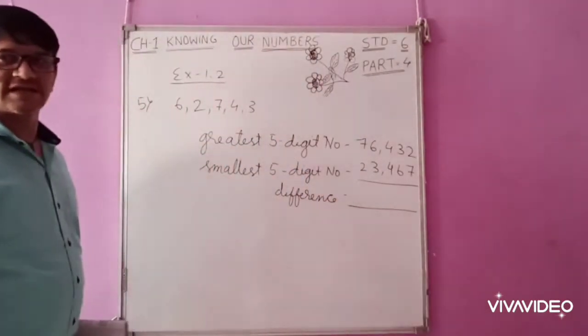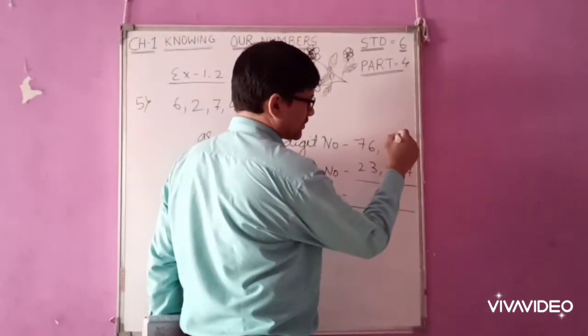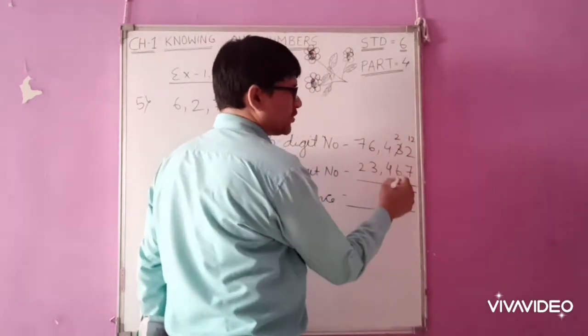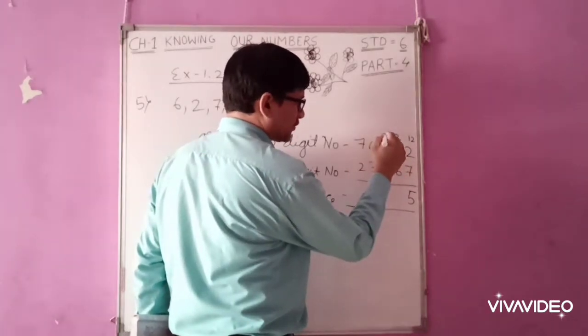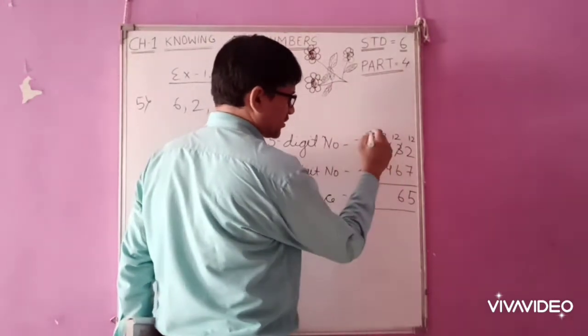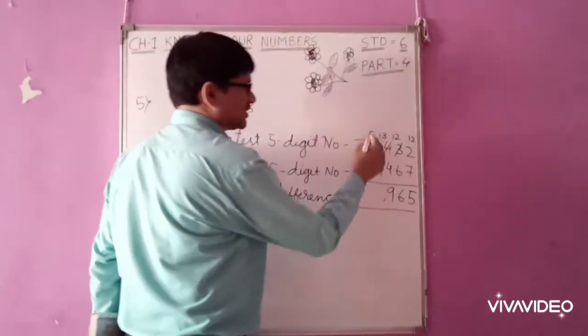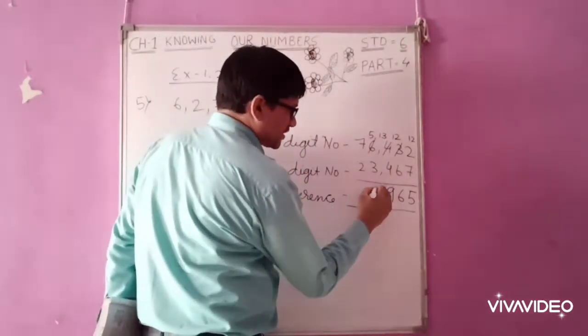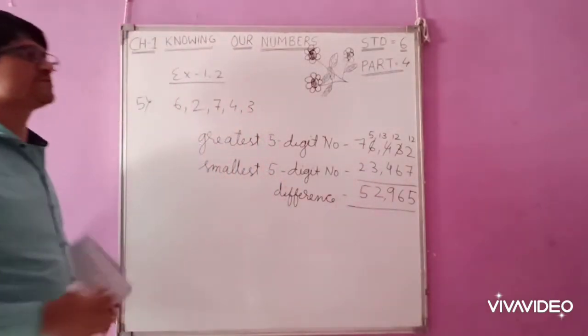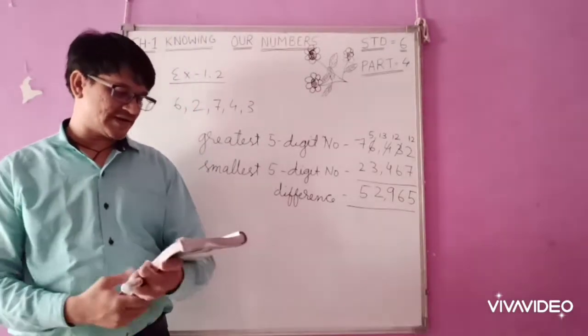Now, subtract them. 2 minus 7, not possible. So we borrow from here to 12. 12 minus 7 is 5. 2 minus 6, not possible. Borrow from 4, 3. 12 minus 6 is 6. 3 minus 4, again not possible. So 5, 13. 13 minus 4 is 9. 5 minus 3 is 2. 7 minus 2 is 5. So the difference between these two numbers is 52,965.